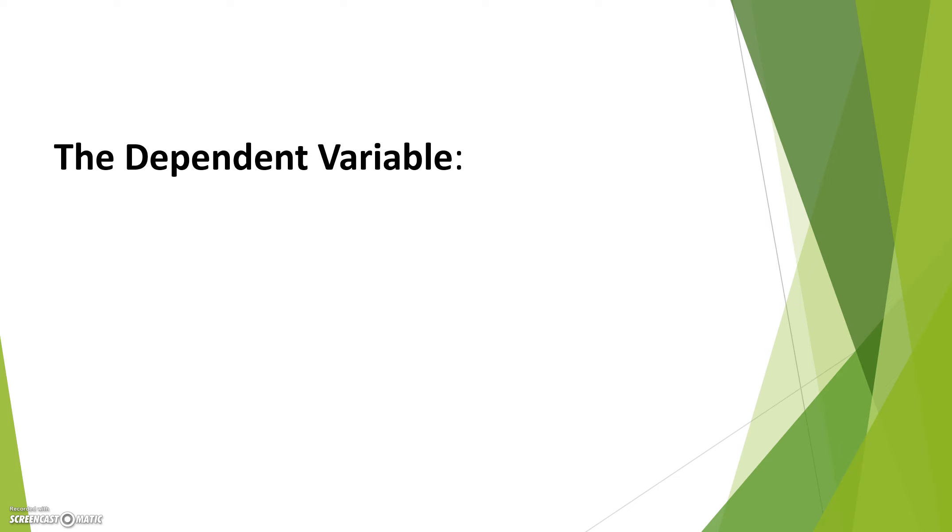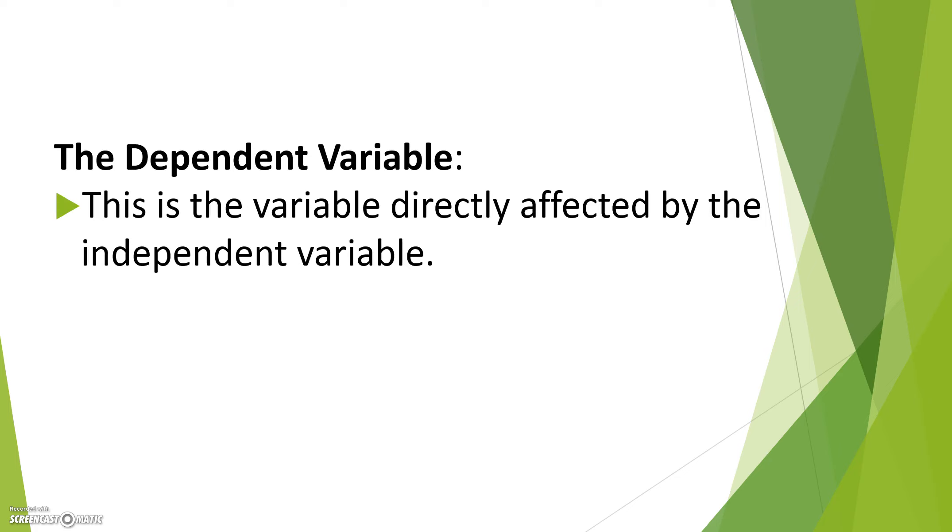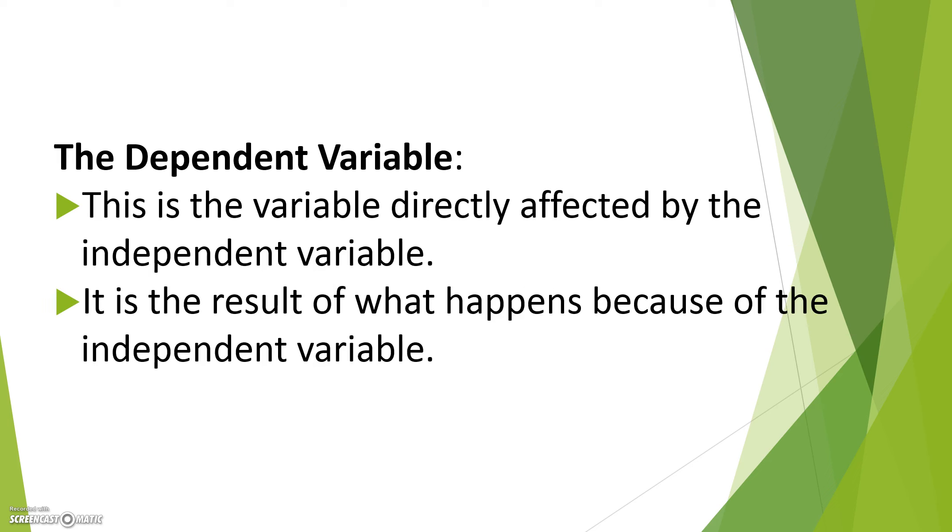Next we have the dependent variable. This is the variable directly affected by the independent variable. It is the result of what happens because of the independent variable. The dependent variable should be placed on the y or the vertical axis.